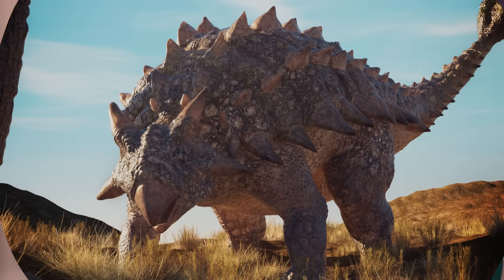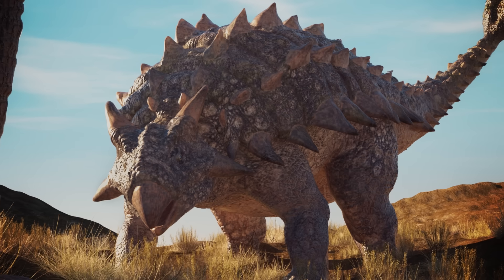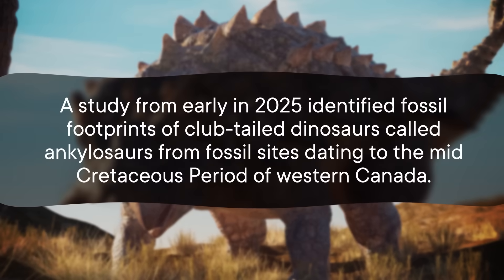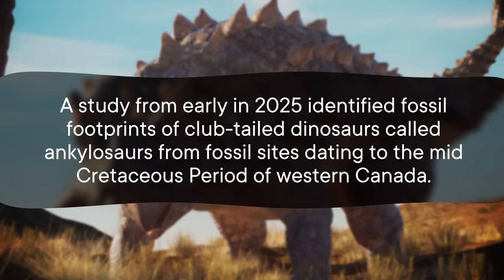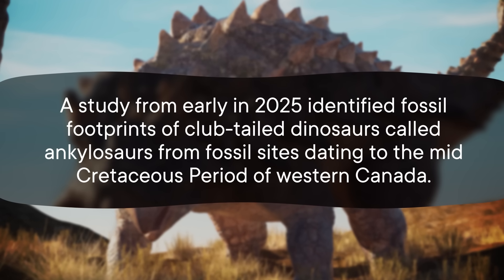So all in all, there are a thousand reasons that the fossils we've collected provide an incomplete vision of the distant past. Some species are overrepresented, and others are hardly represented at all. It's a pretty big problem, but there are plenty of science-based solutions. For one thing, there are lots of different types of fossils, and they can complement each other. Where one type of evidence is missing, others can help fill in the gaps. A study from early 2025 identified fossil footprints of club-tailed dinosaurs called Ankylosaurs from fossil sites dating to the mid-Cretaceous period of Western Canada — and we don't actually have any of their bones from that place and time. So while we don't know what caused this particular preservation bias, the footprints alone help us fill in the gaps left by unequal fossilization.